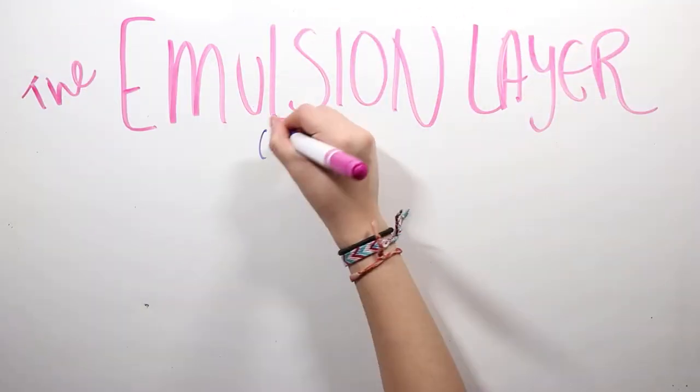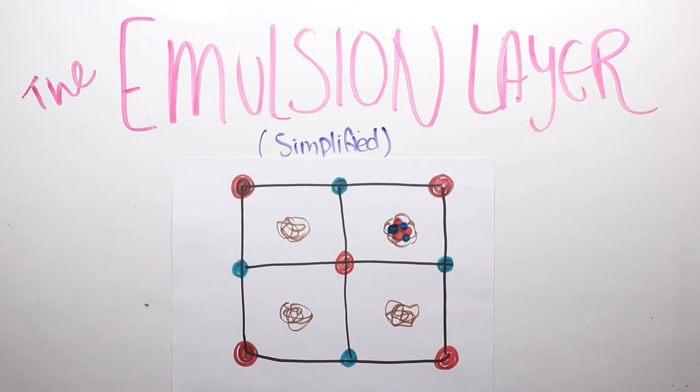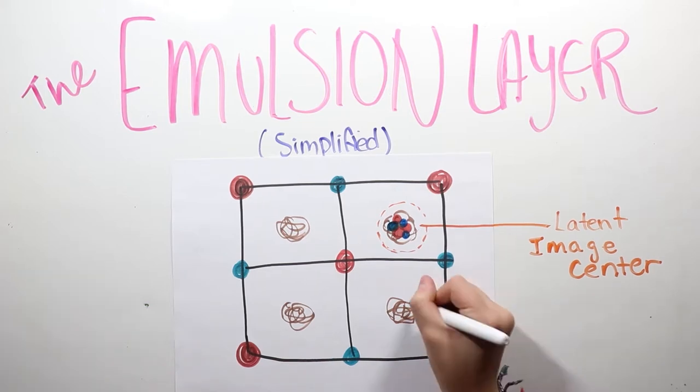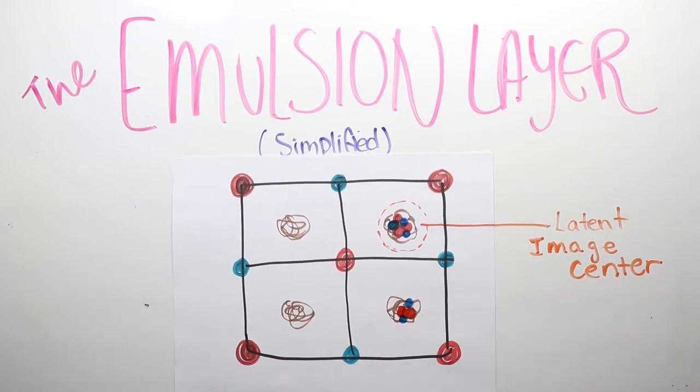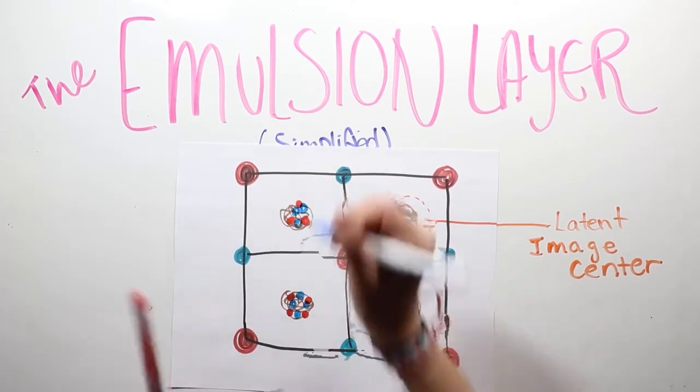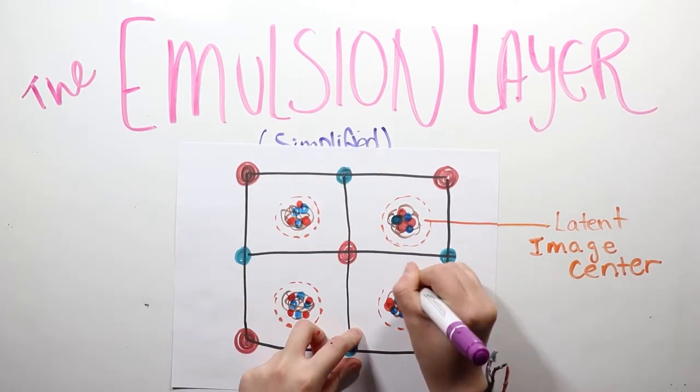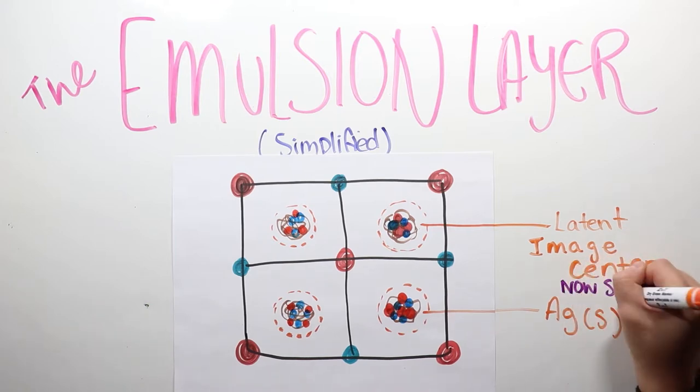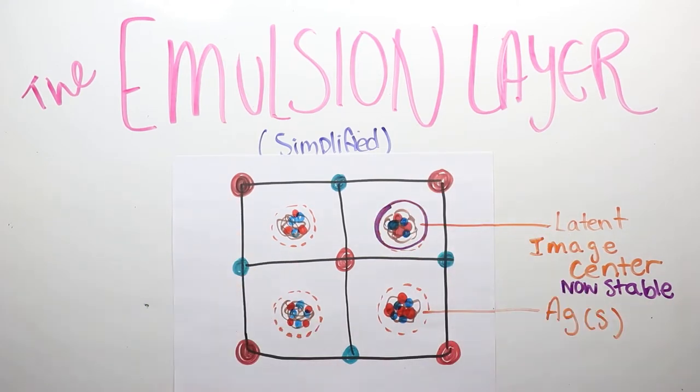The place in which this reaction occurs is called the latent image center. The combining of the bromide ions and the silver ions at the sensitivity spec occurs three to four times at each spec before a small clump of silver is formed. The formation of this clump causes the latent image to become stable, and this creates a latent image that's invisible to the eye.